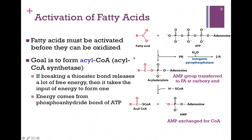Here's our fatty acid chain. The acyl-CoA synthetase is going to transfer AMP from ATP, forming our acyl-adenylate intermediate, and along with that, release inorganic pyrophosphate. So the AMP group has been transferred to our fatty acid at the carboxy end. The next step is simply to exchange AMP for coenzyme A — we're breaking the phosphoester bond in our acyl-adenylate intermediate and forming a thioester link with acyl-CoA, with release of AMP.